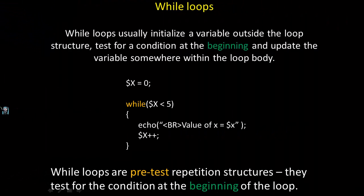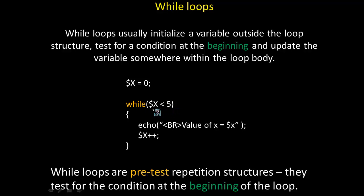Next, we're going to analyze a while-true or while loop. While loops usually initialize a variable outside the loop structure, test for a condition at the beginning, and update the variable somewhere within the loop body, usually at the end. In the example code, the initialization is no longer inside the parentheses as it would be for a for loop — instead, x is initialized to 0 outside the while loop. The condition is still in parentheses: while x is less than 5. The update — postfix incrementing x — is inside the body of the while loop, usually at the end. So x starts at 0, and as long as x is less than 5 the loop iterates, displaying 0, 1, 2, 3, 4, then breaking out of the loop.